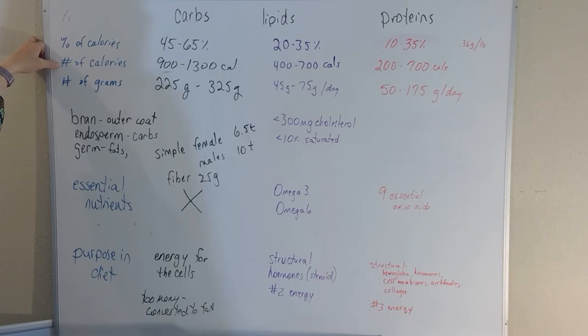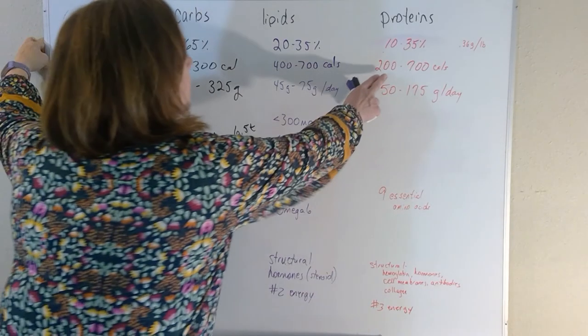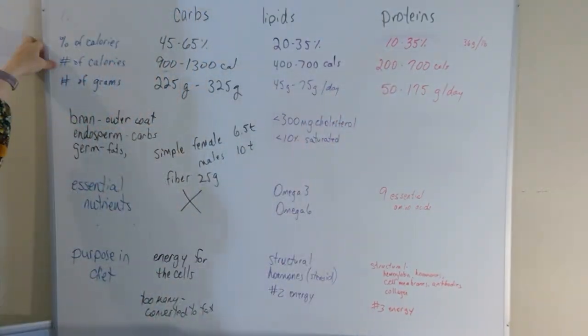If you look at the number of calories that is, that means that you should be eating about 200 to 700 calories per day from protein foods. Which gives you 50 to 175 grams per day of proteins that you should eat. That is if you are on a 2000 calorie diet.